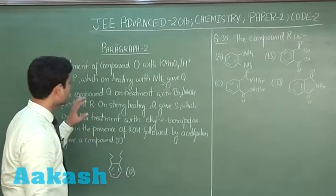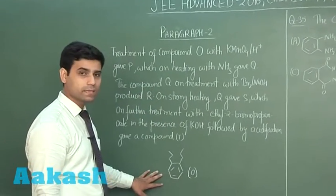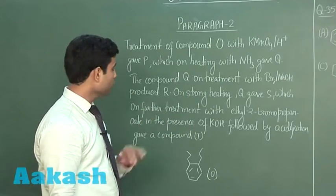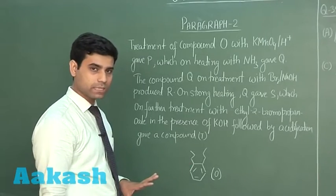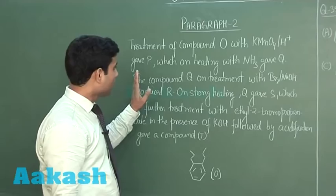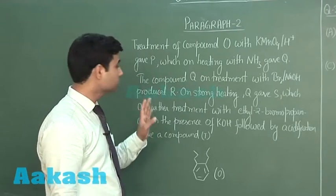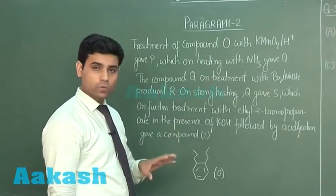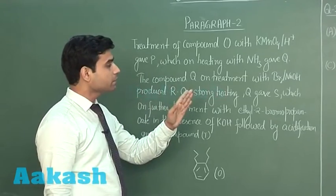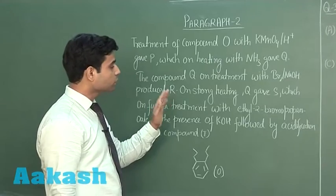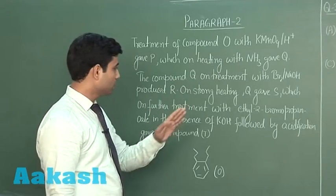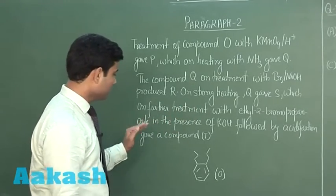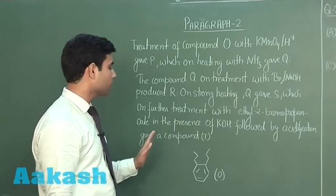This is the next paragraph — paragraph 2 — which says treatment of compound O. Compound O is given here; with KMnO4 and H+ it gave P. When KMnO4 and H+ react with this, it gives a dicarboxylic acid. O on reaction with KMnO4 and H+ gives a dicarboxylic acid, which on treatment with NH3 gave Q. Compound Q on treatment with Br2 and NaOH produced R. On strong heating, Q gave S, which on further treatment with ethyl 2-bromopropanoate in the presence of KOH, followed by acidification, gave compound T.